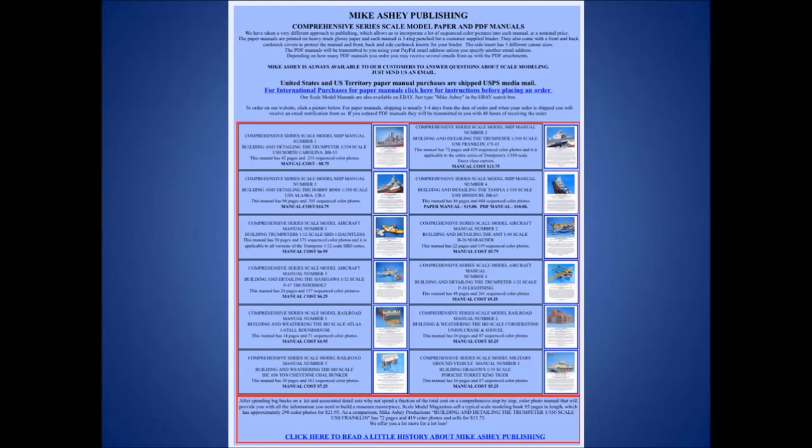And here is our ordering page for our new line of comprehensive series scale model manuals for aircraft, ships, model railroad structures, and military ground vehicles. All of our manuals are in color with a six picture per page format and every picture has an associated caption. And they will provide you with a sequenced step-by-step guide for building your model.